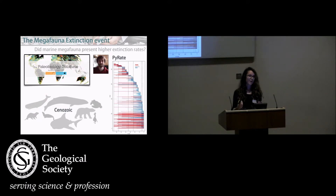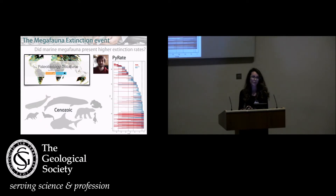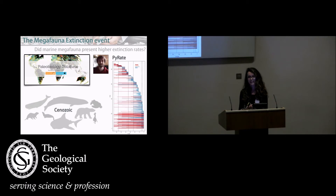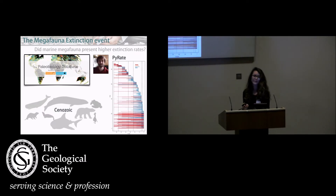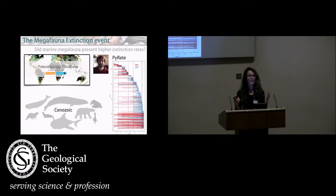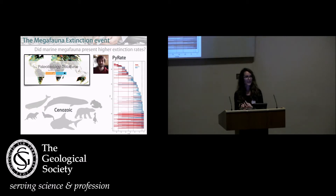PyRate is a new software developed by Daniel Silvestro. We gathered a set of data from the paleobiology database, and we calculated the three things that PyRate calculates: origination and extinction time of each taxon based on all the occurrences, sampling probabilities and recovery probabilities. With that, you calculate extinction rates.